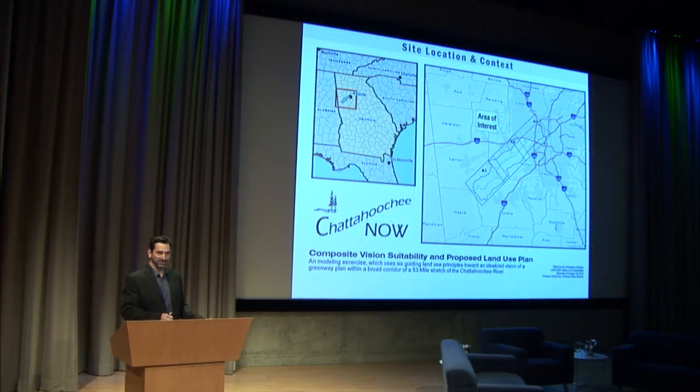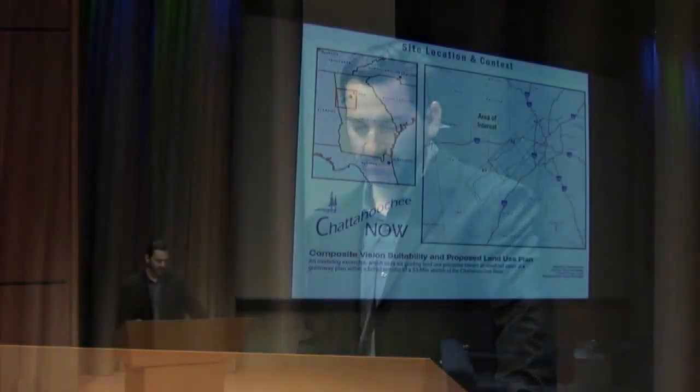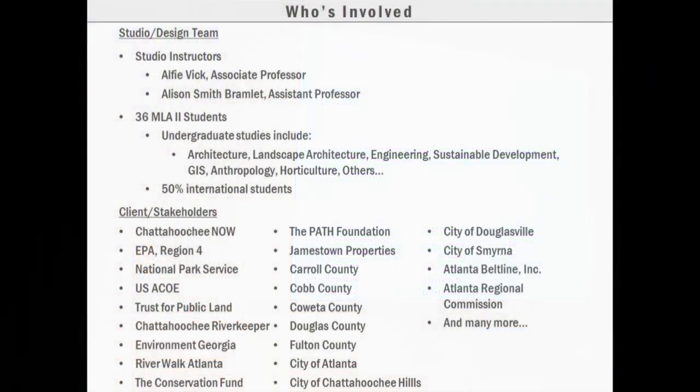The Chattahoochee has been the subject of intense political and environmental scrutiny over the past several decades. Some of you may be familiar with the tri-state water wars and other political disputes. However, it remains largely unseen and inaccessible to residents of the Atlanta metro area. Recently, an NGO called Chattahoochee Now was formed to help coordinate efforts to realize the ecological, social, and economic potential of the river for the Atlanta area. Our studio engaged with this group to bring the geodesign process to their planning.